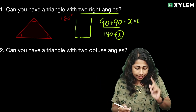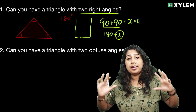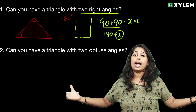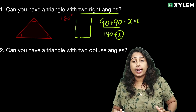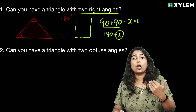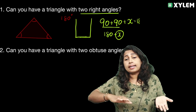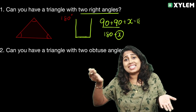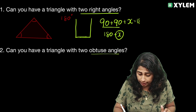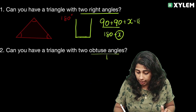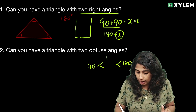Clear? Next: Can you have a triangle with two obtuse angles? First, you need to know what an obtuse angle is. An obtuse angle is greater than 90 degrees but less than 180 degrees.